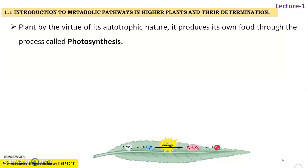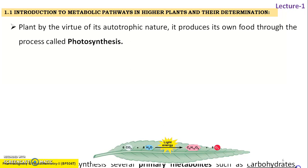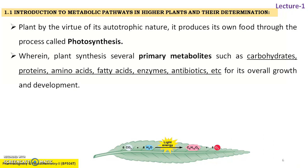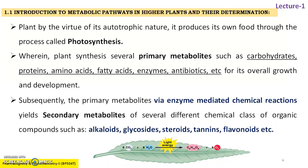Introduction. Plants, by virtue of their autotrophic nature, produce their own food through photosynthesis, wherein plants synthesize several primary metabolites such as carbohydrates, proteins, amino acids, fatty acids, enzymes, and antibiotics for overall growth and development.